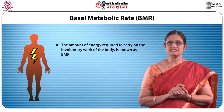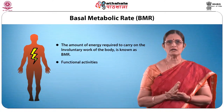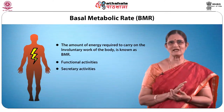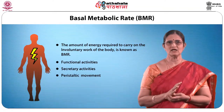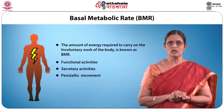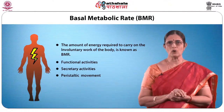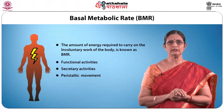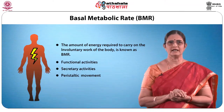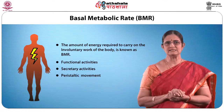Basal metabolic rate covers the functional capacity of various internal organs such as the brain, heart, kidney and lungs, the secretory activities of glands, peristaltic movement of the gastrointestinal tract, oxidation occurring in resting cells, maintenance of muscle tone, and also body temperature. The brain and nervous tissue account for one-eighth of the energy utilized at the basal state, and the lungs, liver, heart and kidney account for an additional three-fifths of energy utilized at the basal state.